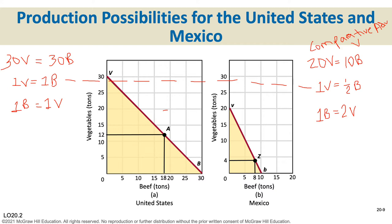Now comparing opportunity costs for beef: in the United States, one ton of beef costs one ton of vegetables; in Mexico, one ton of beef costs two tons of vegetables. So the United States has the comparative advantage for beef. Every time you solve these problems, calculate the opportunity cost for both goods in both countries and then just compare them.